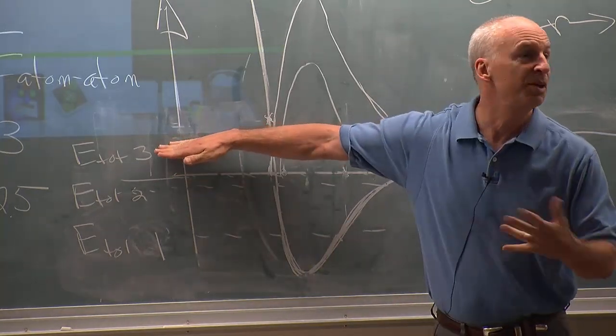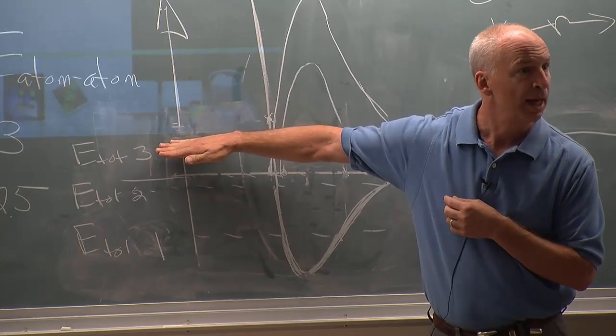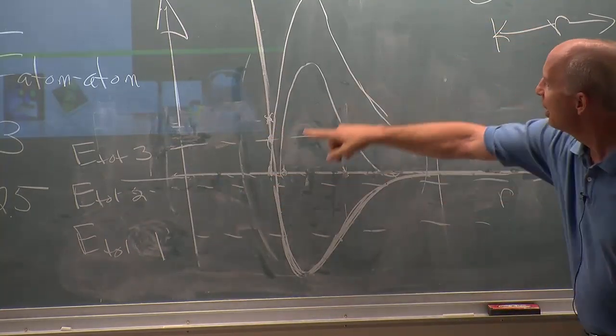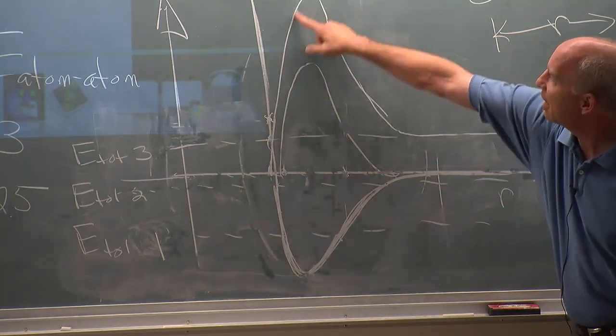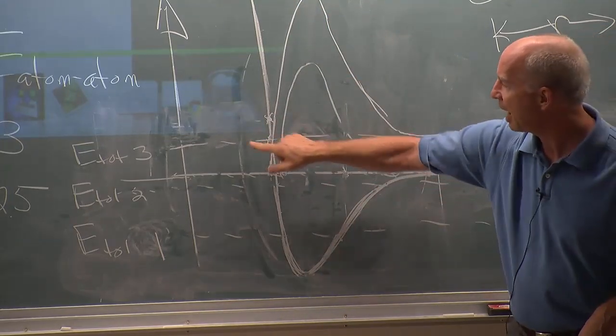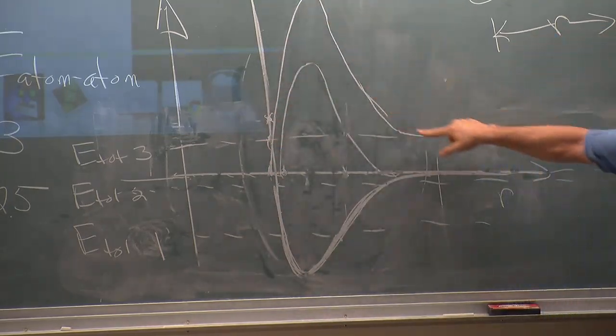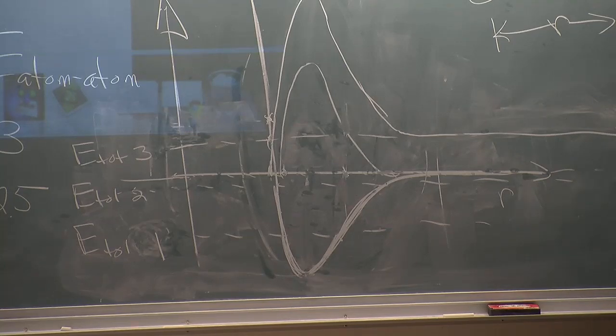That the total energy was going to be up here? And if the total energy is up here, then the kinetic energy, which you can get from that and the potential, the kinetic energy looks something like this. Because when they're very far apart, they're still moving.